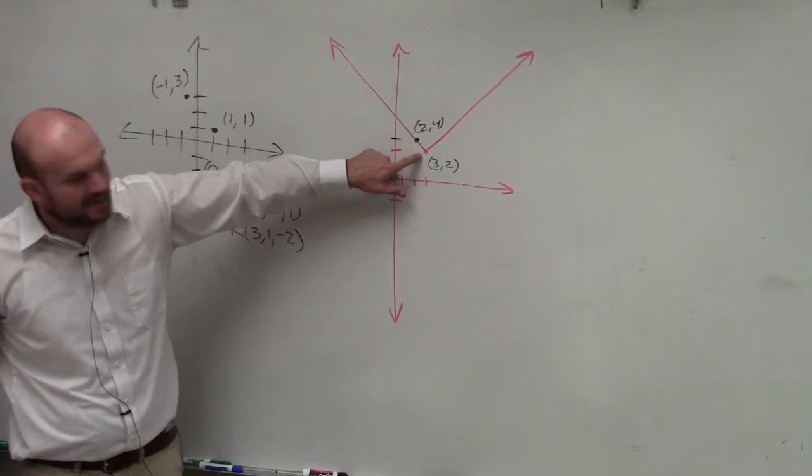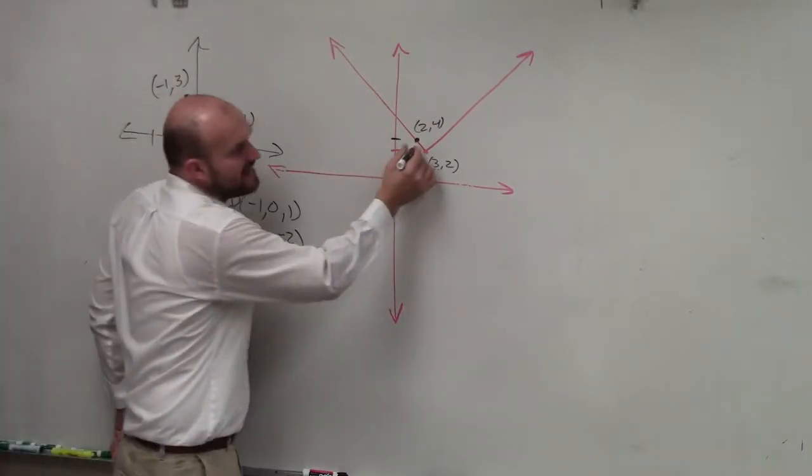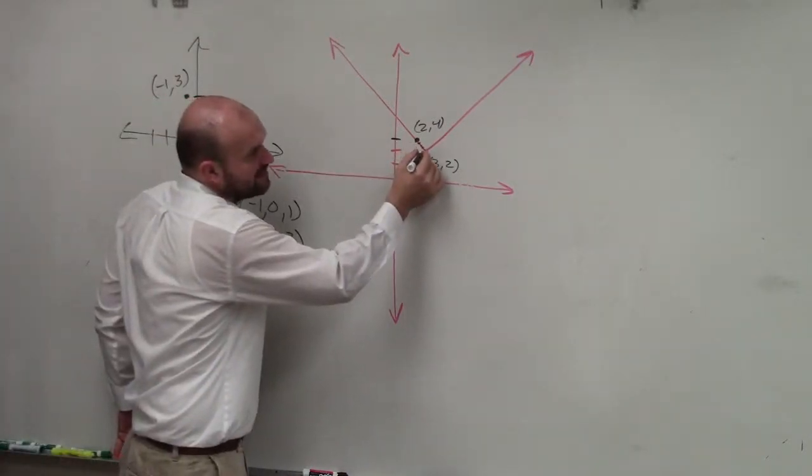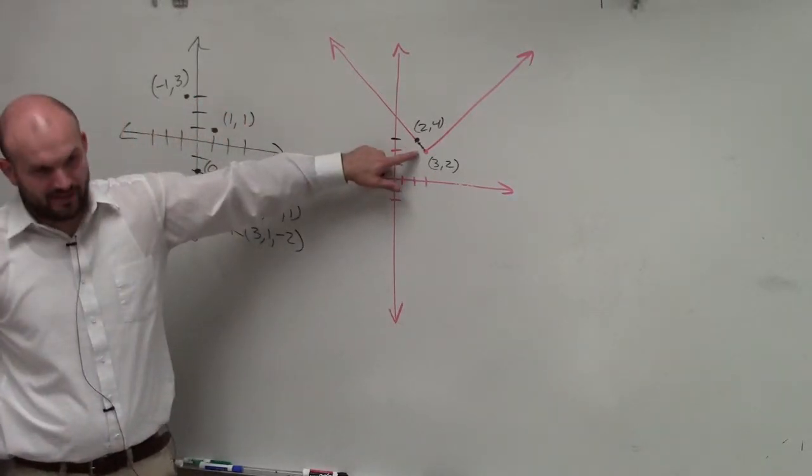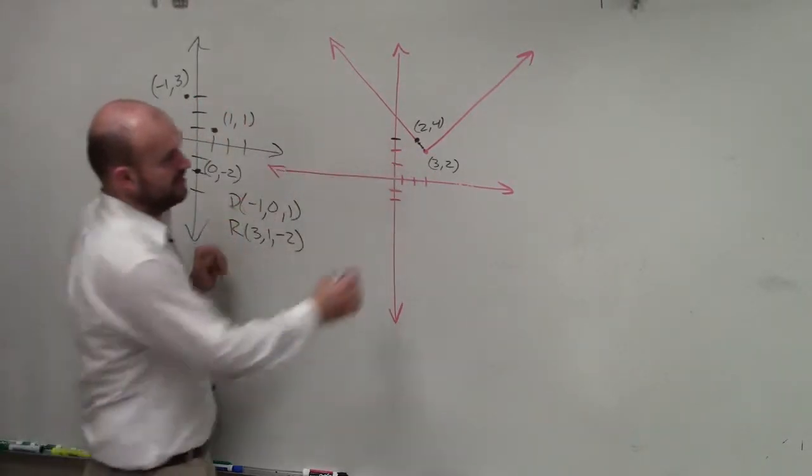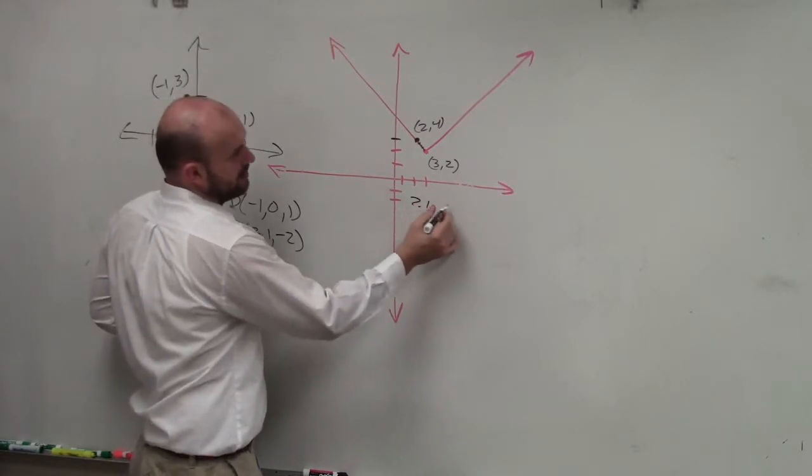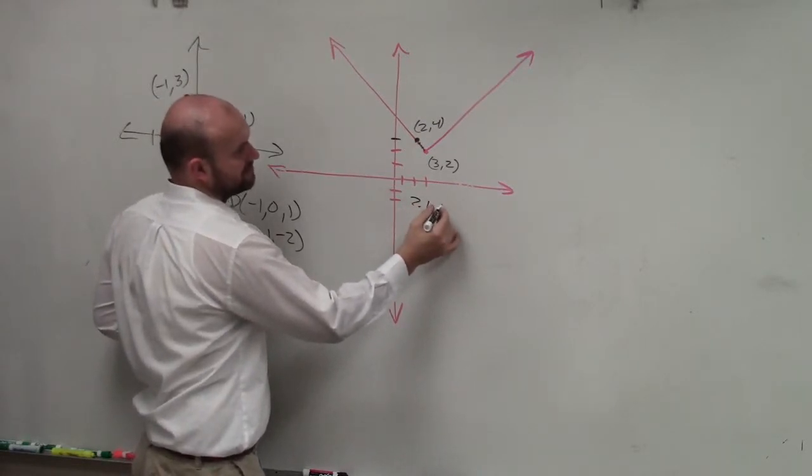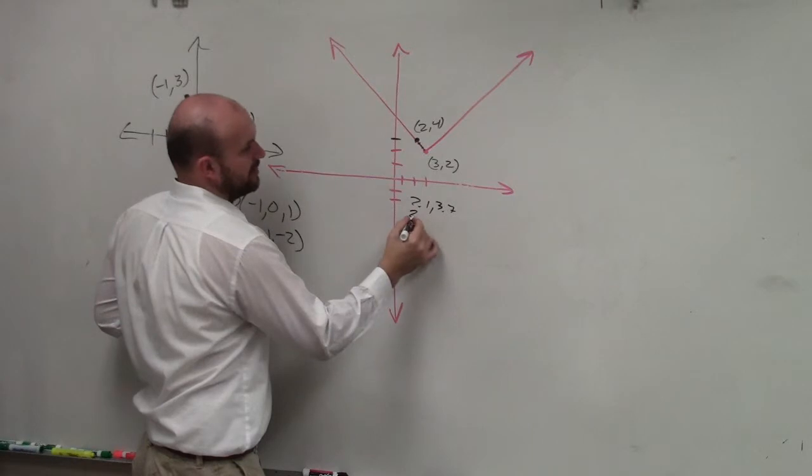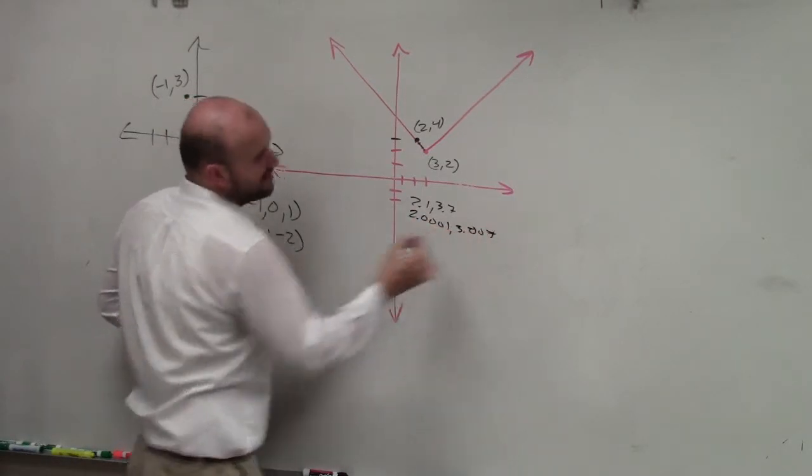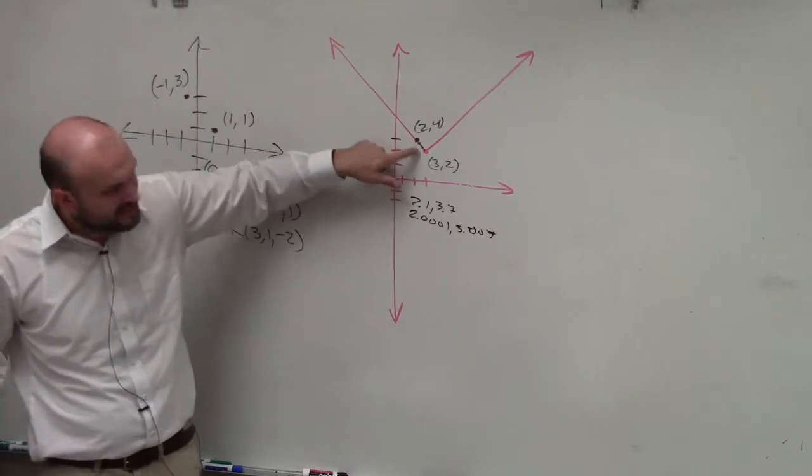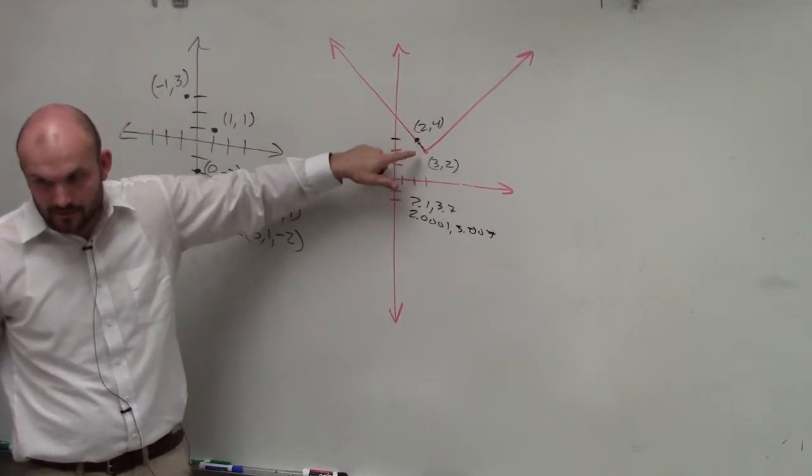But what does this line represent? This line represents infinitely many points in between there. So you can't list all these points that are listed right there. You don't want to do 2.1 comma 3.7. You don't want to do 2.0001 comma 3.0007. You guys see how it's impossible to list all the points that make up the line, right?